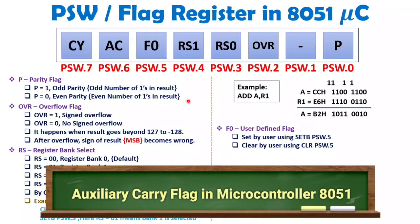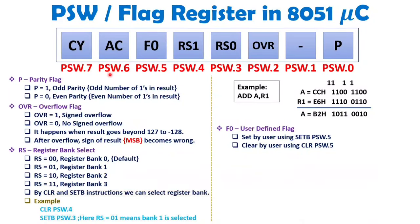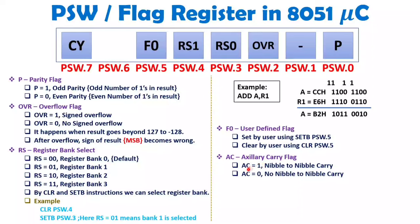PSW.6 is the AC flag, the auxiliary carry flag. Auxiliary carry is a nibble-to-nibble carry, where a nibble means 4 bits. In our addition, the lower 4 bits form the lower nibble and the upper 4 bits form the upper nibble. The carry generated from the lower nibble to the upper nibble is the auxiliary carry. In this particular instruction execution, the auxiliary carry is 1.